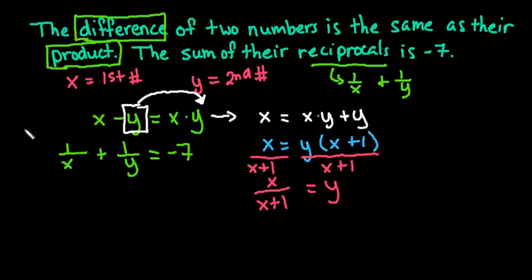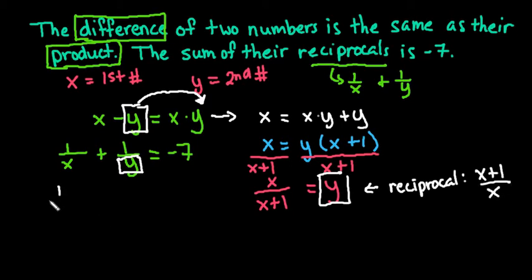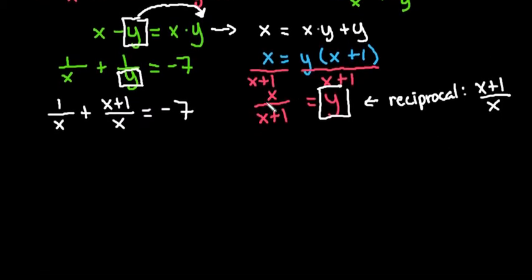Now that we've solved for y, we want to replace y back into the other equation. Since we're dealing with the reciprocal, instead of plugging in x over x plus 1, it's easier to find the reciprocal of this. The reciprocal would be x plus 1 over x. So I plug this in as 1 over x plus x plus 1 over x equals negative 7.